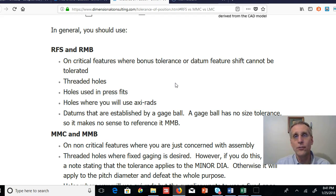If you have datums that are established by a gauge ball, sometimes you might have centers on the edge of a shaft, and you might have a gauge ball in that center, and you might actually make the gauge ball a datum. But the gauge ball theoretically has no size tolerance, so there's no way to reference it MMB. It's just perfect, so it's got to be regardless of feature size.